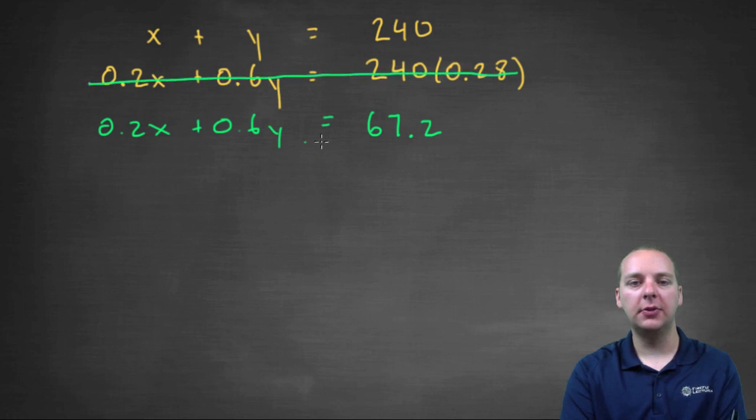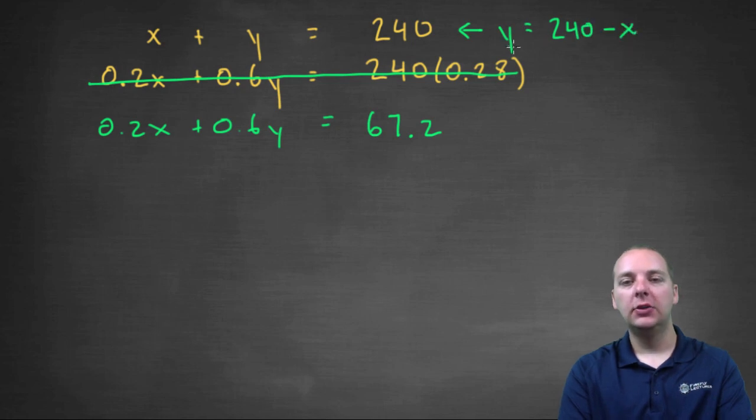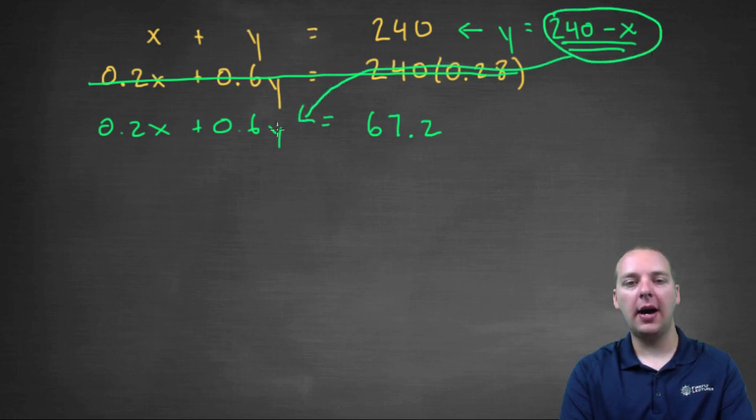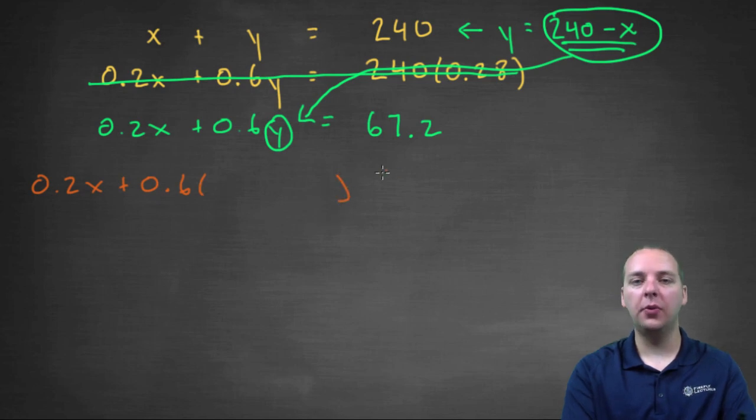So let's get rid of this equation because I've just rewritten it. For this one, let's solve it for one of the variables, x or y, it doesn't really matter. I'll solve it for y. Y would equal 240 minus x. So since this is what y is equal to, you can take this expression and plug it in for y right there. Now I'll change colors, you'll get 0.2x plus 0.6 times y, whatever y is, equals 67.2, and I'm going to paste 240 minus x in place of y.